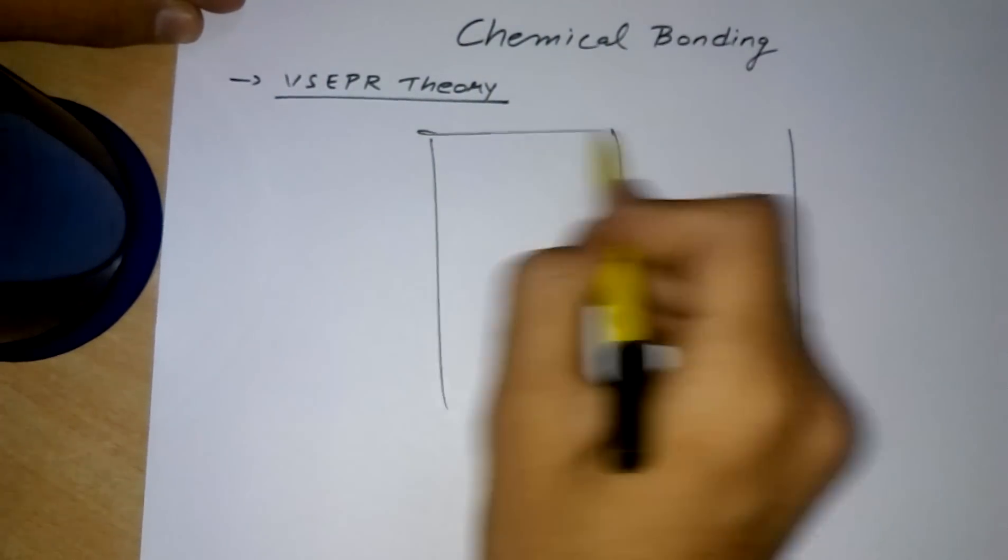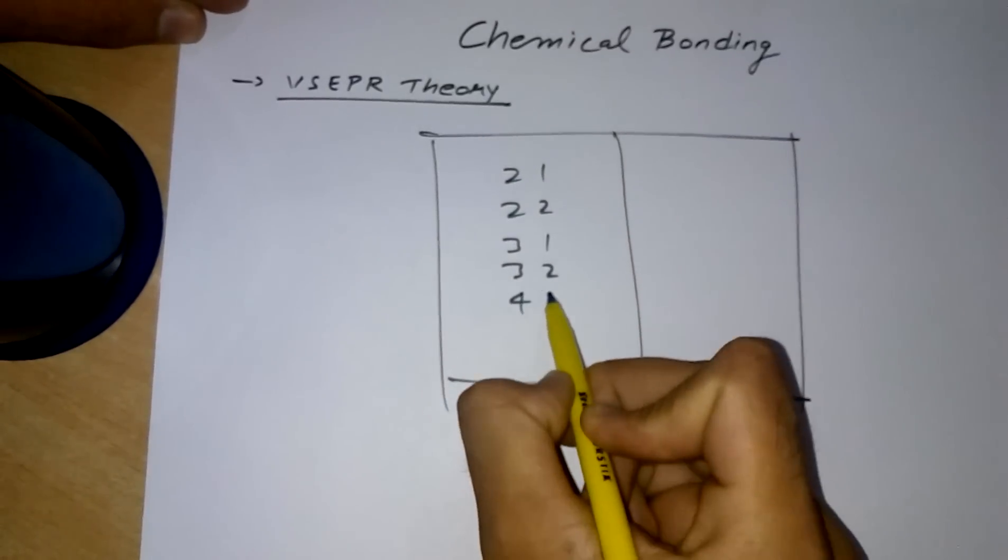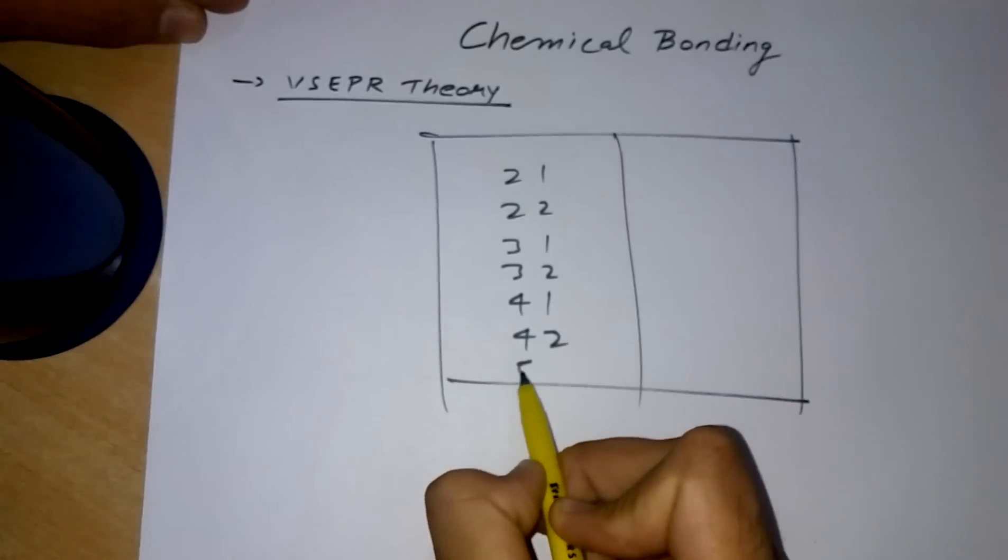See, what you have to do is make a table like this: 21, 22, 31, 32, 41, 42, and 51.